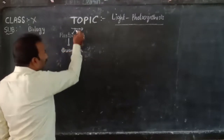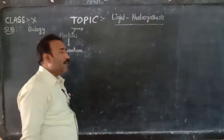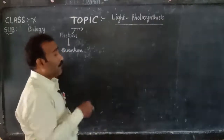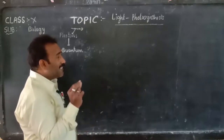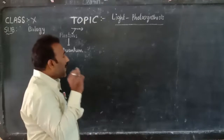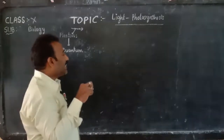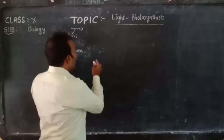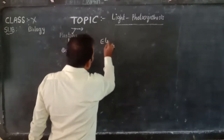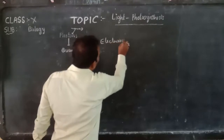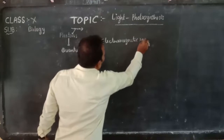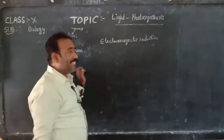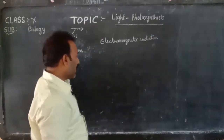Light is also one part of electromagnetic radiation. What is electromagnetic radiation? The radiation that is emitted by a magnetic field whenever electricity is induced into the magnetic field is called electromagnetic radiation.